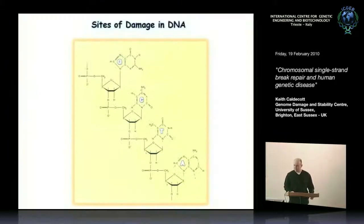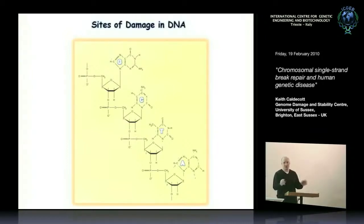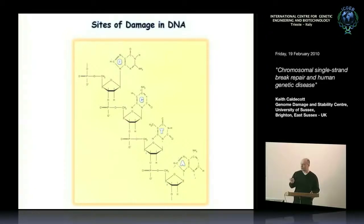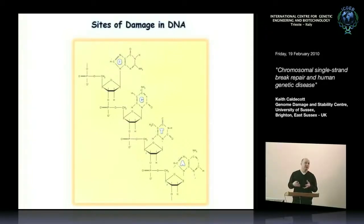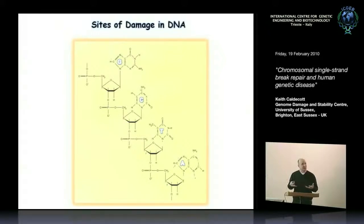I don't entirely know how broad the audience's experience is in terms of DNA damage, so I'll put in at least one introductory slide to orient you. This is one strand of a DNA double helix, made up of the sugar phosphate backbone and the nucleobases. Although we think of DNA as a stable structure, it has a certain intrinsic instability associated with its chemistry. Many of the bonds that make up DNA are subject to nucleophilic attack by reactive oxygen species or electrophilic molecules like alkylating agents, and even hydrolytic attack is also a major problem.